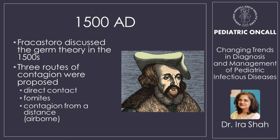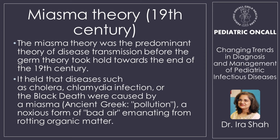If we talk about modern medicine, Fracastoro was the one who talked about germs in the year 1500 AD. He said they spread through direct contact, fomites, and airborne routes — but nobody believed or accepted his theory at that time. In fact, he was the one who described syphilis for the first time. What people used to accept was the miasma theory, which held that cholera, malaria, and black death were all due to bad air — a theory accepted right until the 19th century.